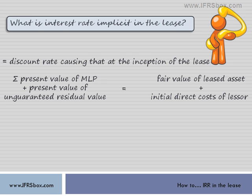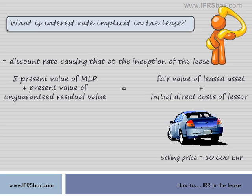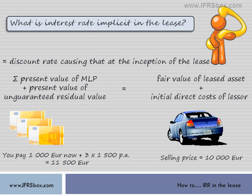Let's assume a very simple example without any complications arising from initial direct costs and unguaranteed residual value. If you'd like to check on that, please watch our long video on IAS 17. So let's say you want to buy a car that costs €10,000 in the regular car shop, but you don't have €10,000 in your pocket, so you decide to lease it. Under your lease conditions, you must pay €1,000 immediately when you take a car. Then you will pay three annual installments of €3,500 each starting after one year. In total you'll pay €11,500 over the lease term of three years.